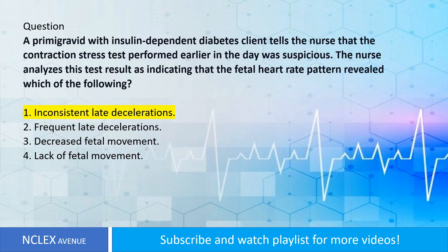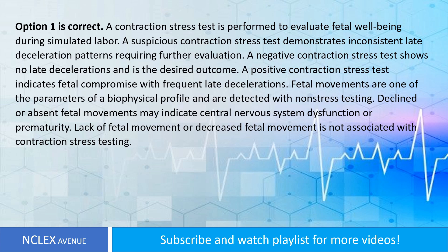Answer: Option one is correct. A contraction stress test is performed to evaluate fetal well-being during simulated labor. A suspicious contraction stress test demonstrates inconsistent late deceleration patterns requiring further evaluation. A negative contraction stress test shows no late decelerations and is the desired outcome. A positive contraction stress test indicates fetal compromise with frequent late decelerations.